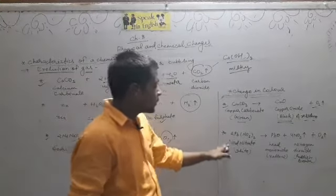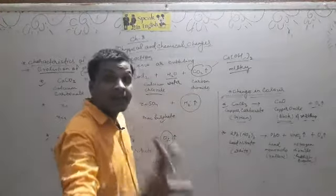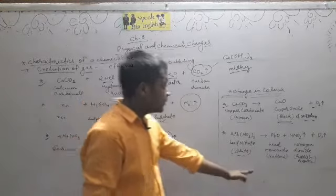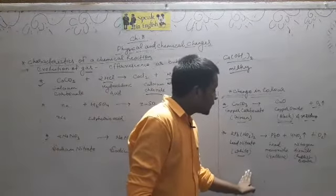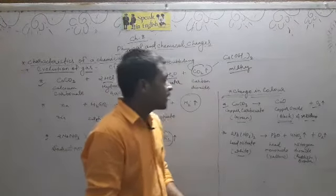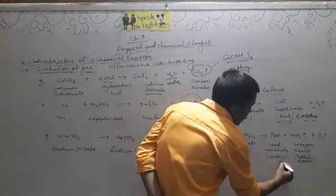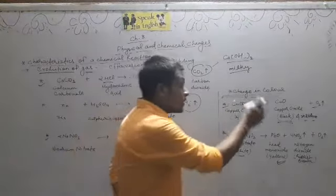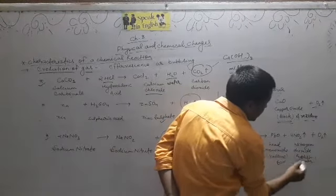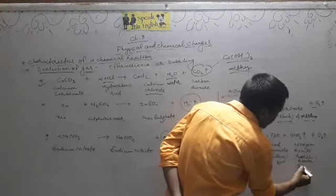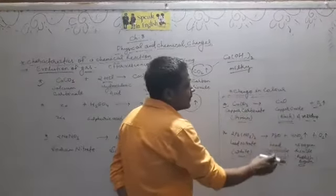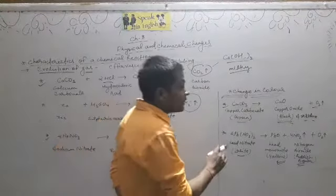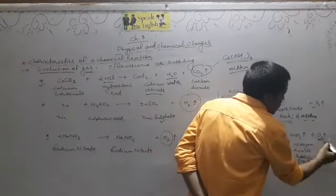Second example: lead nitrate, जो कि white color का होता है — जब lead nitrate को strongly heat करेंगे, तो lead monoxide मिलेगा जो कि yellow color में होता है, and nitrogen dioxide gas — जो कि reddish brown color में होती है — भी release होगी, along with oxygen gas.